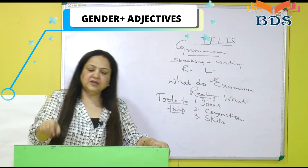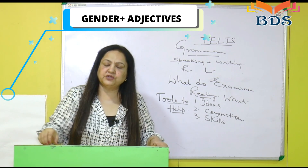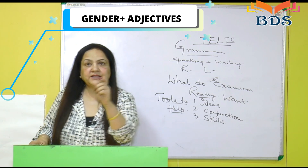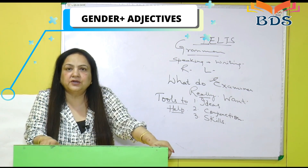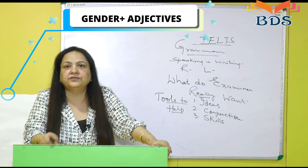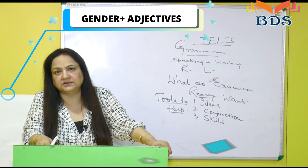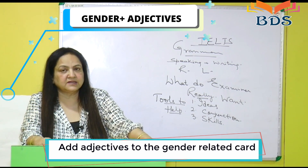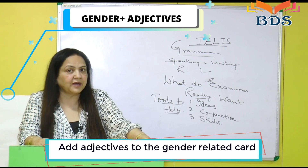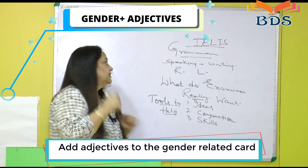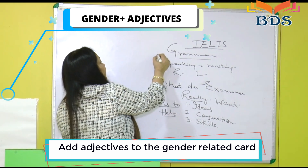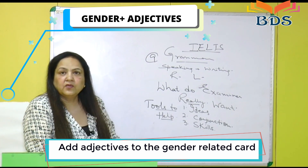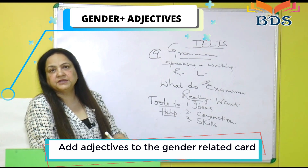When the card is related to gender, adjectives come along with it. Don't try to give a simple card — complex sentences with good vocabulary is the secret of nine bands. So pick up the gender carefully.